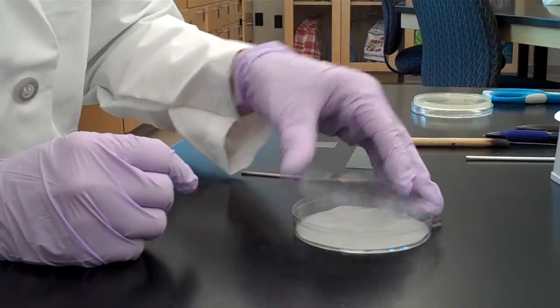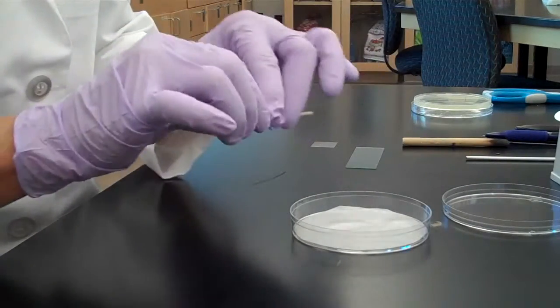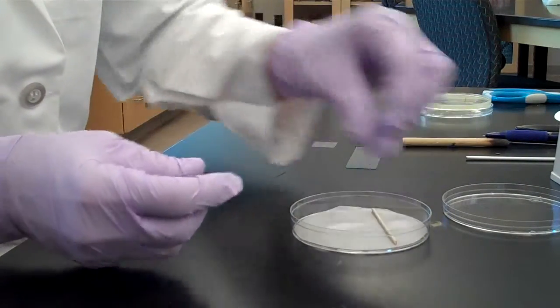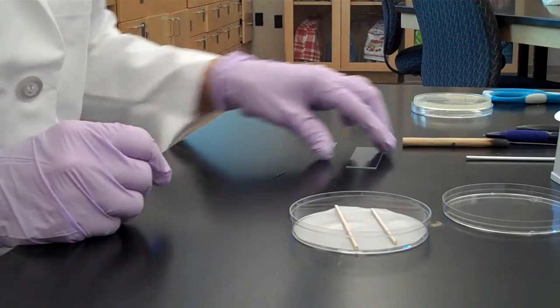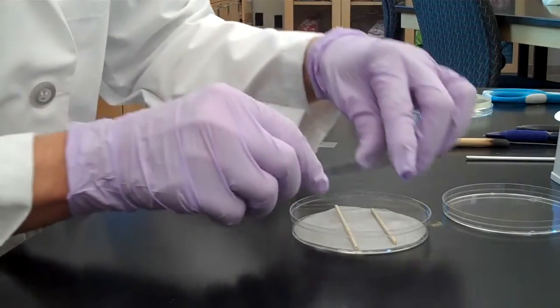Take a wooden applicator stick and break it in half and place the sticks into the petri dish. This is going to serve as a support system for our slide, so go ahead and put your slide on top of your broken sticks.